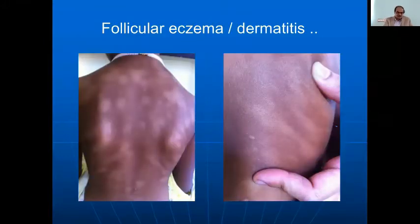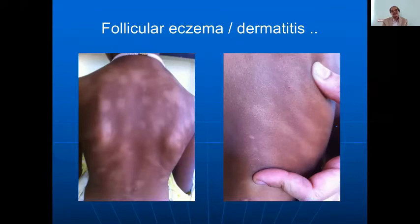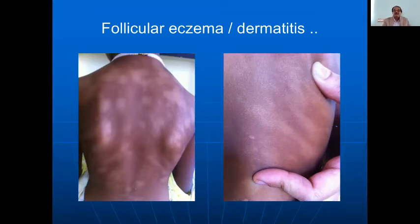Sometimes hypopigmented patches all over the body can look like leprosy, but if you look more closely you can see individual follicular dots making up the patch — this is follicular dermatitis or eczema, simply a part of atopic dermatitis. A sufficient amount of liberal use of emollients will correct it.